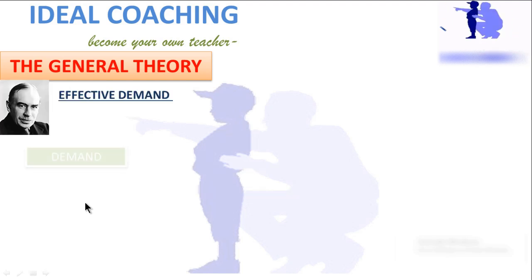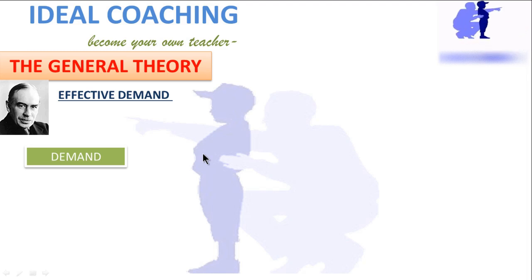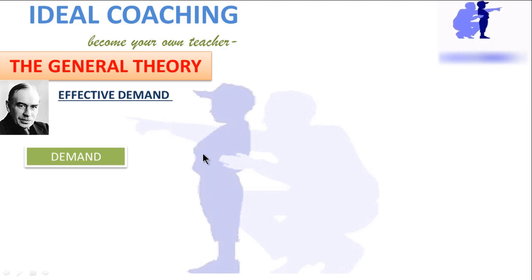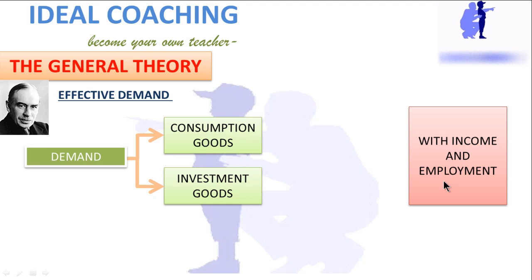Now, effective demand — what was Keynes' effective demand? After analyzing income, output, and employment, the principle of effective demand is basic to Keynes. With effective demand, the theory of economics has been radically changed. He suggested that the principle tells us that in the short period, an economy's aggregate income and employment are determined by the level of aggregate demand. There could be demand for consumption goods and investment goods, and all these demands depend upon income and employment. As income increases, there will be an increase in demand, but the demand for consumption goods will increase less than the income increased.